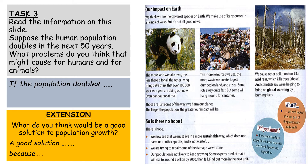Your second main task is to read the information on the slide headed 'Our Impact on Earth.' It says we think we are the cleverest species on Earth and we make use of its resources in all kinds of ways, but it's not all good news. We are taking over land that is there for other living things too — over 100,000 species a year are dying out now, and even pandas are at risk. The more resources we use, the more waste we create, and it gets dumped on land and at sea; some rots away quite fast but some will hang around for centuries. We cause other pollution too, like acid rain which kills trees, and scientists say we're helping to bring on global warming by burning fuels.